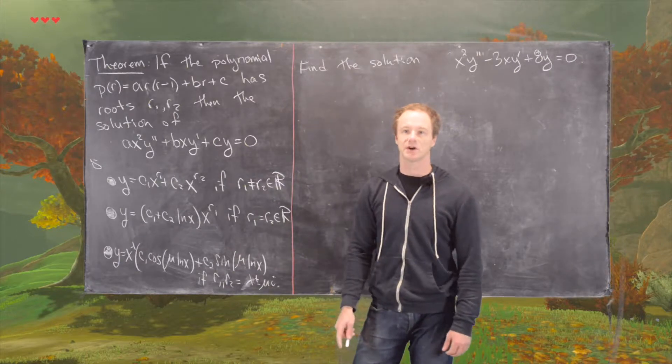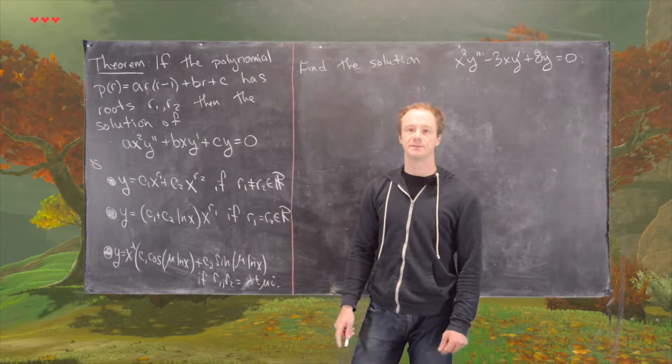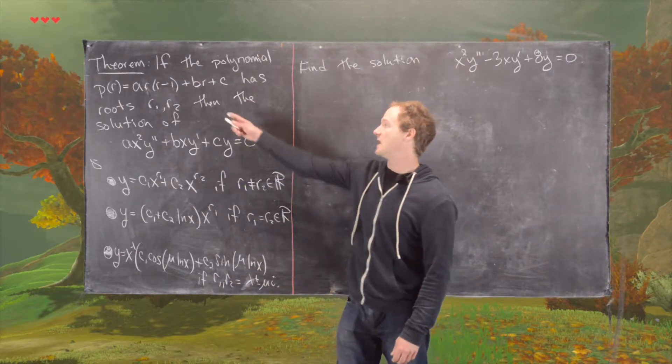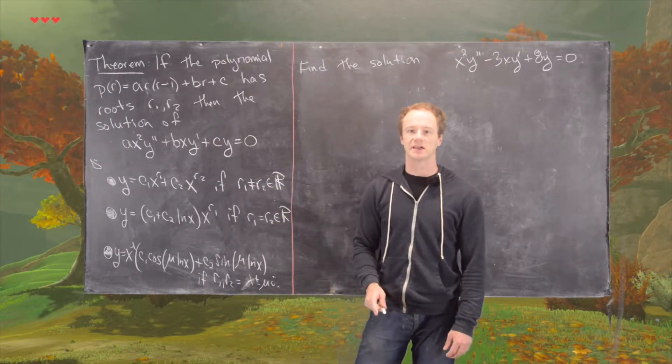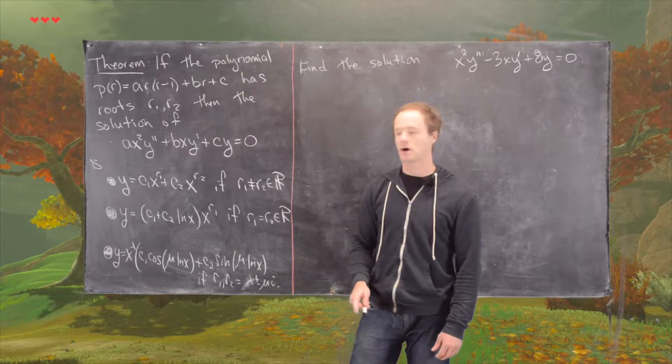Their solutions are governed by the roots of the associated polynomial known as the indicial polynomial. It's given by A times R times R minus one plus B times R plus C. If the roots are distinct and real, we get a solution that's C1 X to the R1 plus C2 X to the R2.